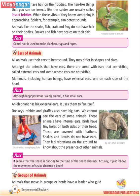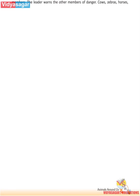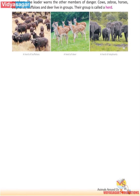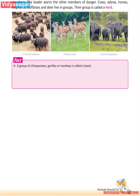Groups of Animals. Animals that move in groups or herds have a leader who guides the other group members and warns them of danger. Cows, zebras, horses, elephants, buffaloes and deer live in groups called a herd. A group of chimpanzees, gorillas or monkeys is called a band. A band of chimpanzees has around 15 to 18 members.